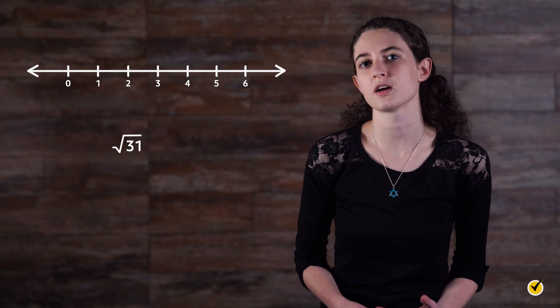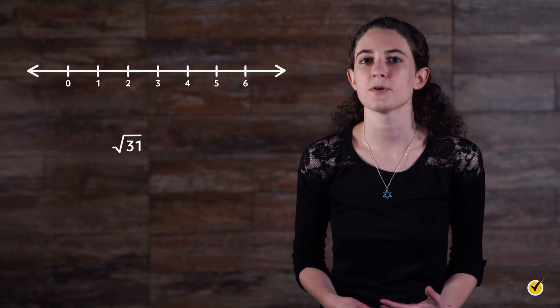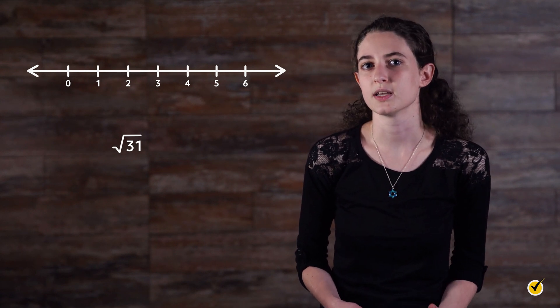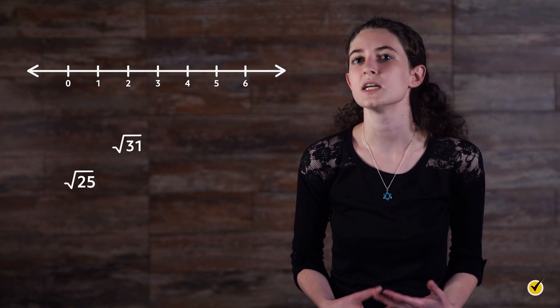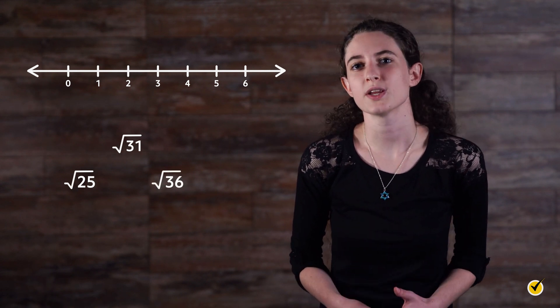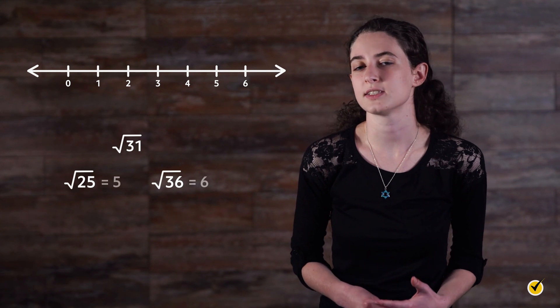Now let's say we have the square root of 31. Where would this value fall on the number line? 31 is not a perfect square. The closest perfect square that is less than 31 is 25, and the closest perfect square that is greater than 31 is 36. The square roots of 25 and 36 are 5 and 6 respectively, so we know we can place the square root of 31 somewhere in between.